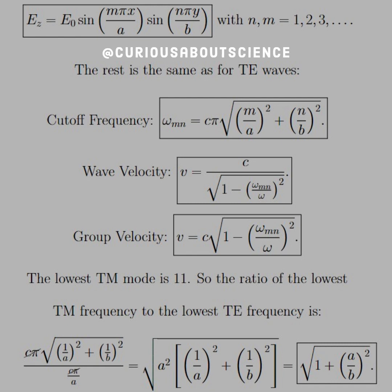Here we can't have that. So the ratio: we plug in one for m and one for n for the TM, and we saw that one for the first index and zero for the second on the TE mode gave us cπ over a. The cπ cancels in both, and we can push the a in.